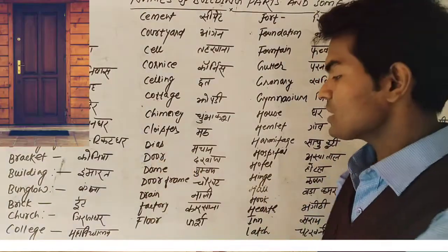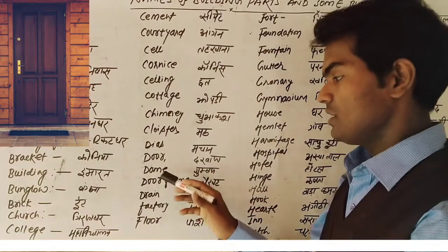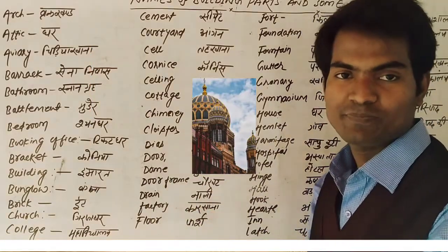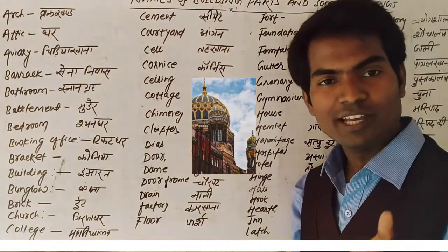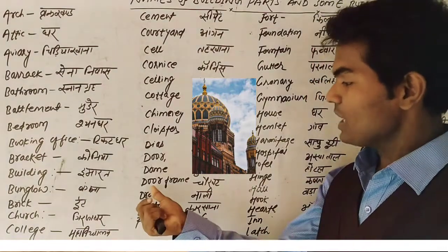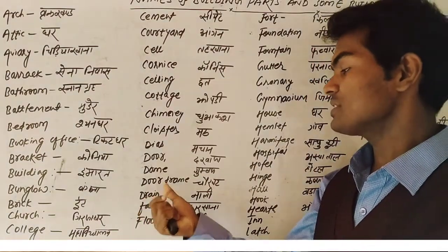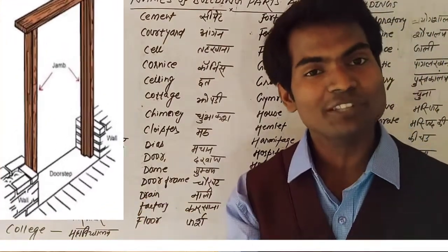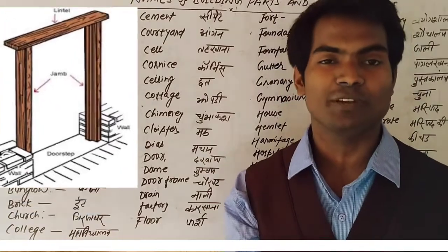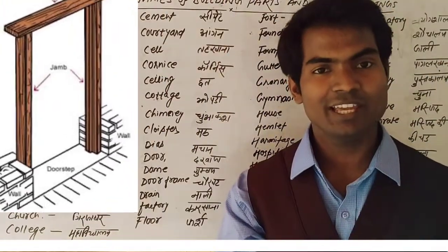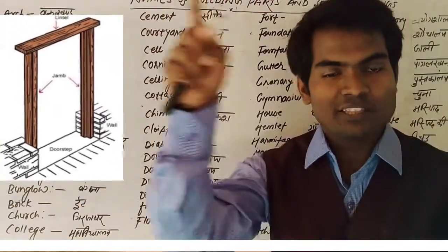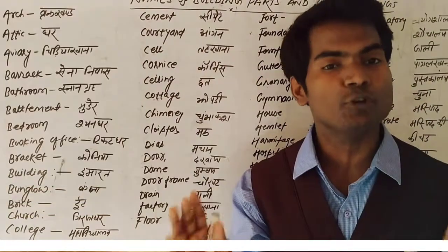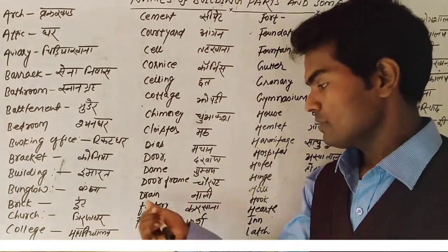Door means 'darwaza.' Dome means 'gumbaj.' Door frame — aap sabhi ko pata hoga ki door frame ko kehte hain 'chokhat.' Darwaze ka jo frame hota hai use chokhat bolte hain, or door frame bolte hain. Drain — drain ka matlab hota hai 'nali,' jis pe paani ka supply hota hai, kachare ka supply hota hai nali ke zariye se.